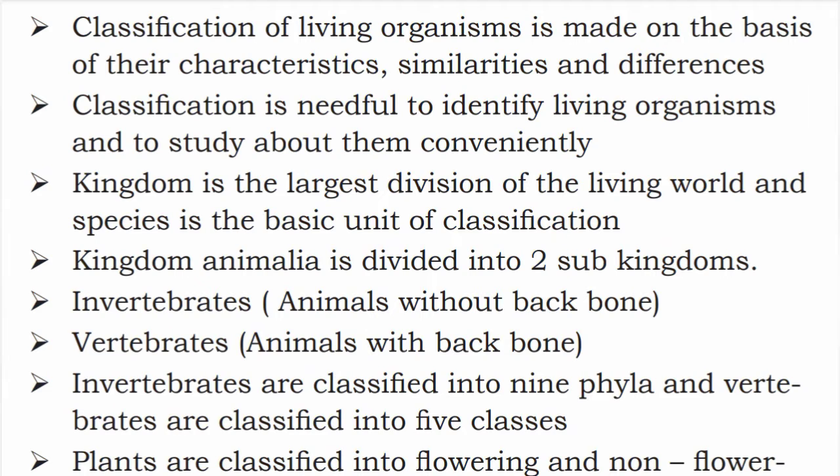In 1969, R.H. Whittaker proposed a five-kingdom classification of living organisms. It includes five kingdoms, namely Monera, Protista, Fungi, Plantae, and Animalia.